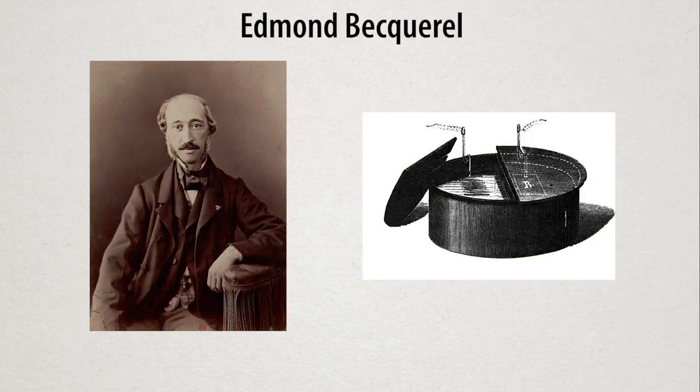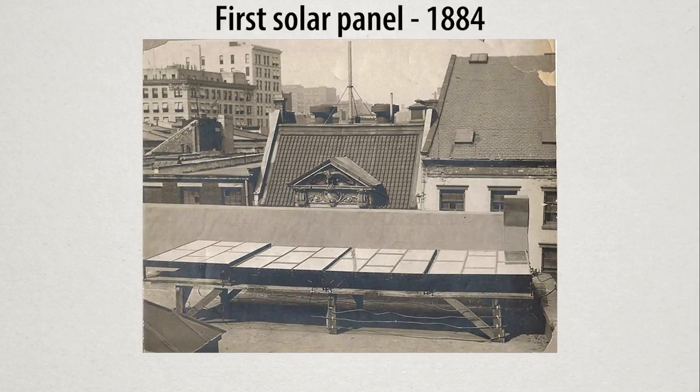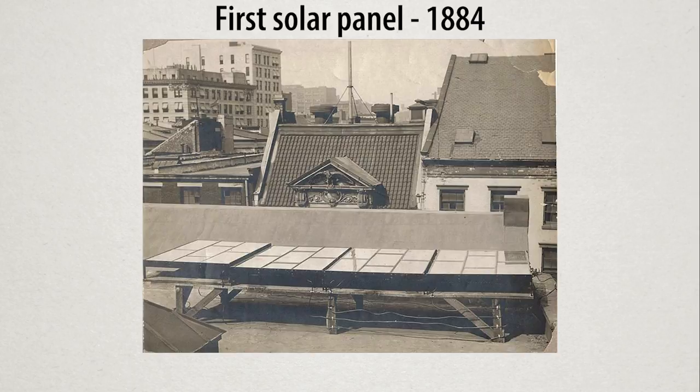From here, it wasn't long until the first solid-state cells were made. The first of which was made in 1884 by Charles Fritz. While these cells only had an efficiency of 1 or 2%, this was already a major accomplishment.